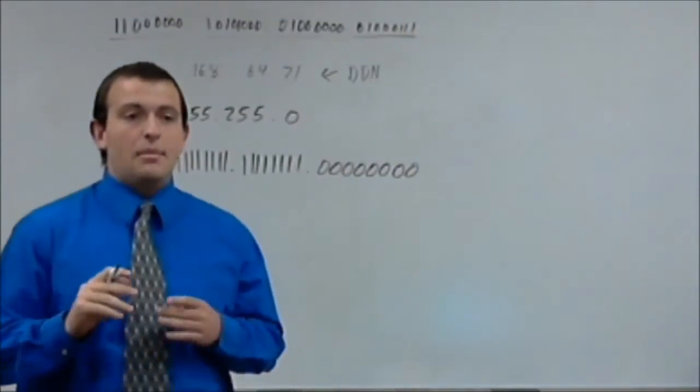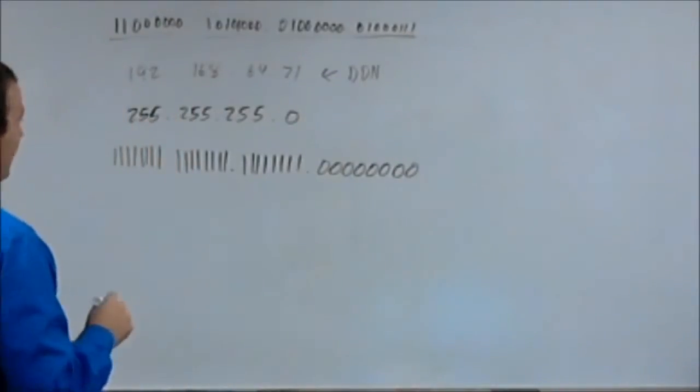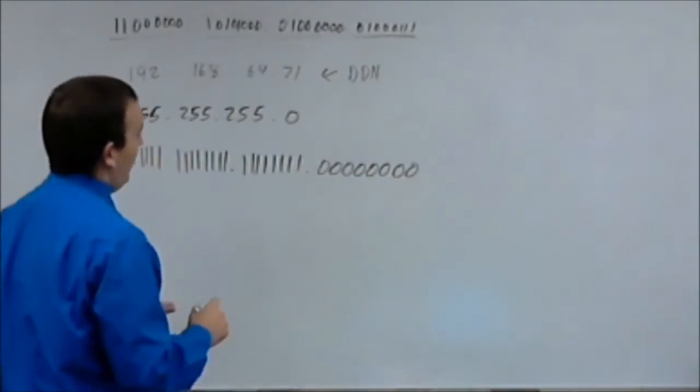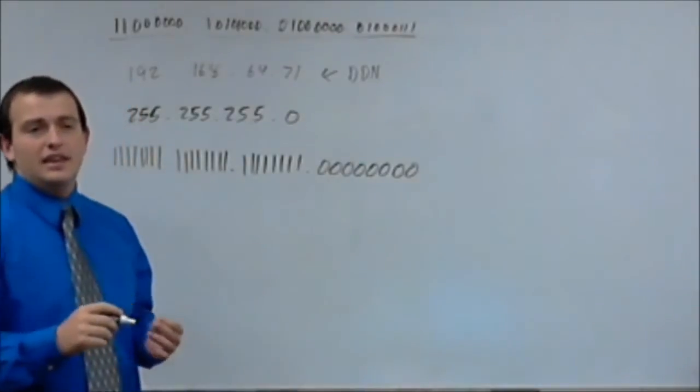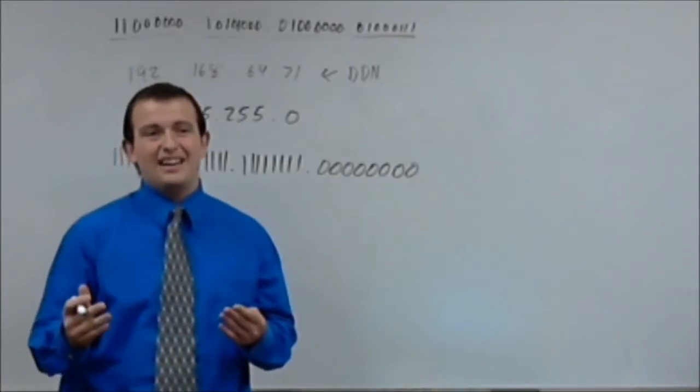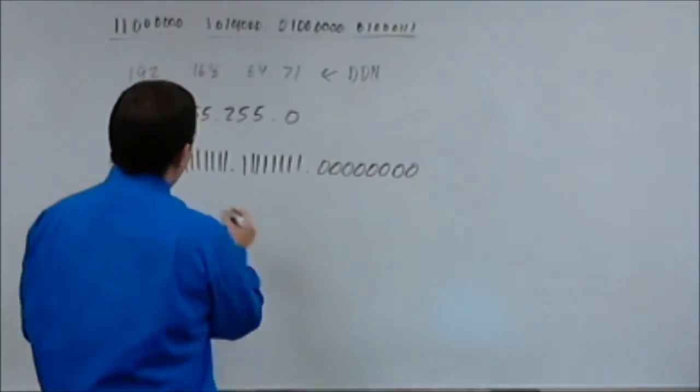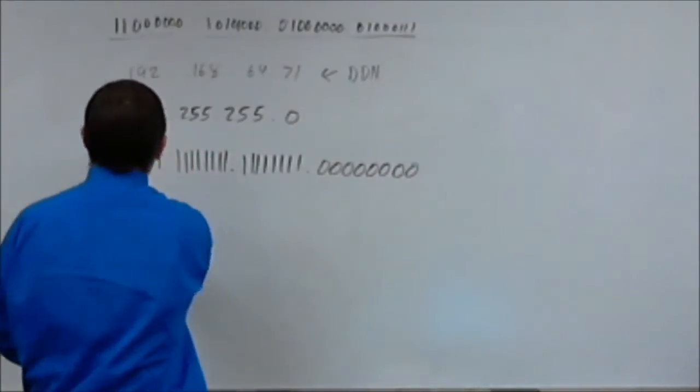So, you've still got, in a subnet mask, you've still got four octets. And these four octets are going to identify or separate the network section or the subnet ID from the host portion or the host ID. Now, right here you can see all of these ones are grouped together.